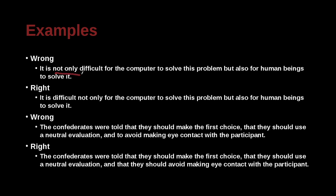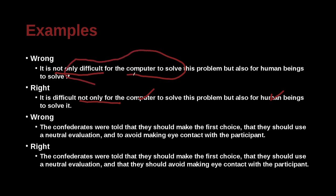'It is not only difficult for the computer to solve this problem, but also for human beings to solve it.' This makes it sound like the computer is actually on its own doing something. The correct sentence is: 'It is difficult not only for the computer to solve this problem, but also for human beings to solve it.' This is a problem that is difficult whether you use computers or humans — that is different from saying it is not only difficult for the computer, as if the computer can do other things. It is a machine.